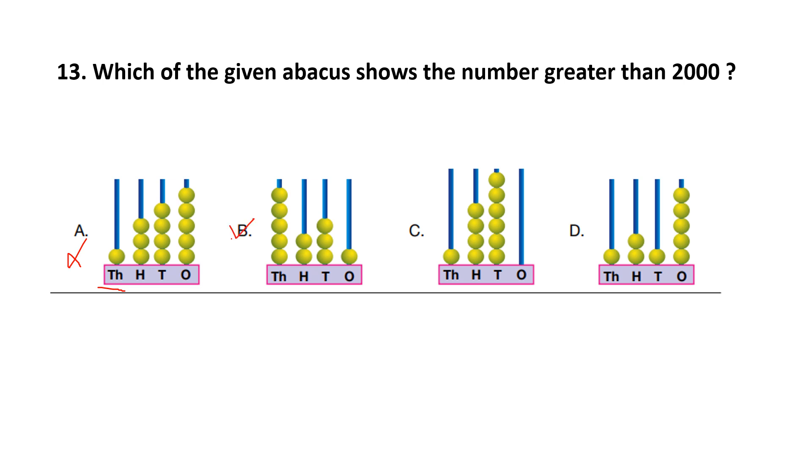In option C, there is also single ball. So, this is less than 2000. So, this is also incorrect. Option B also has at 1000 place, 1 ball. So, this is not our answer. Answer is option B.